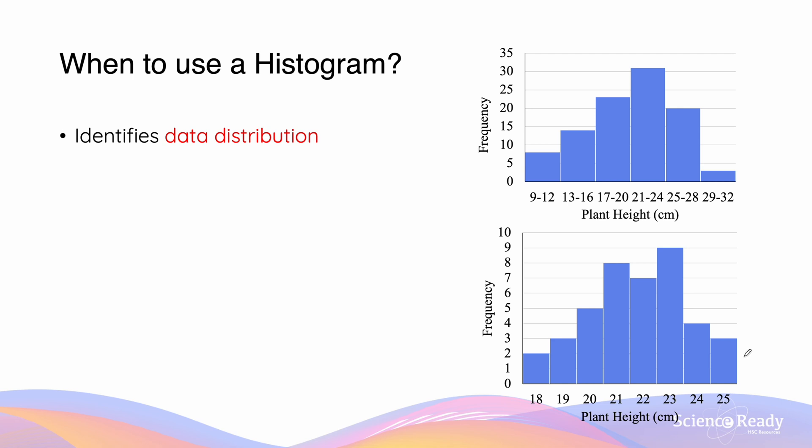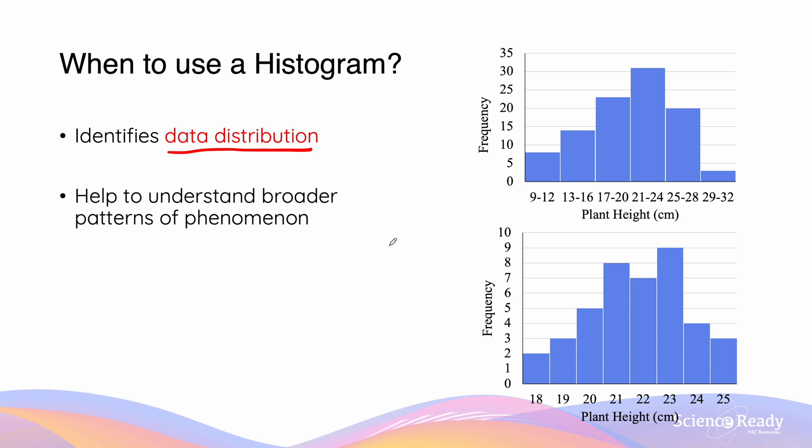Histograms are going to be used when we want to identify data distribution. This means they help us understand broader patterns that are going to exist, particularly for large data sets. An example that we've used here is we want to look at the distribution of plant height for 100 plants that were grown over the same period of time.